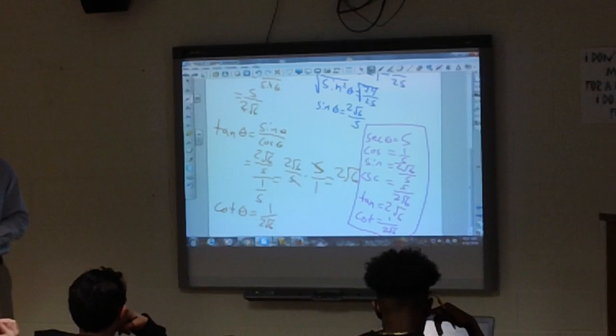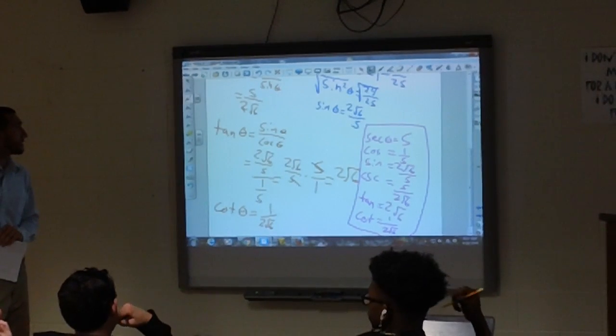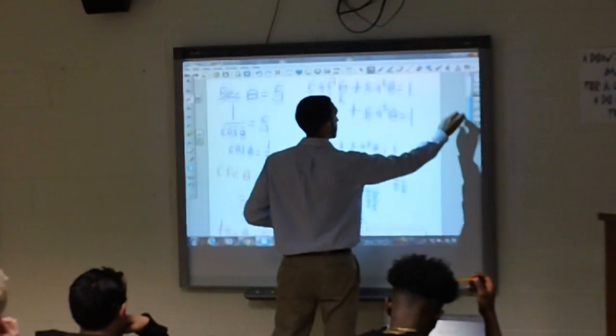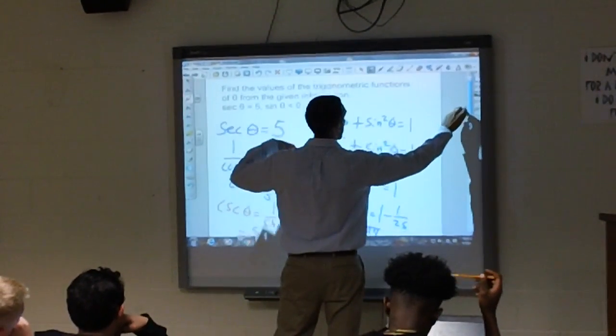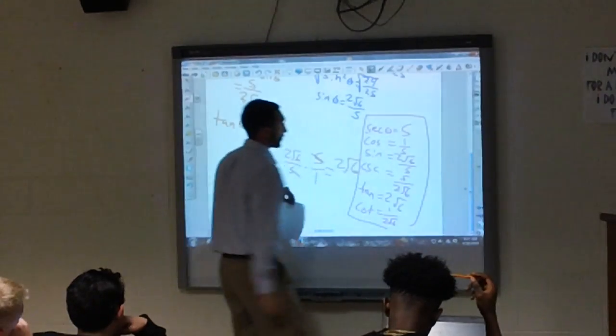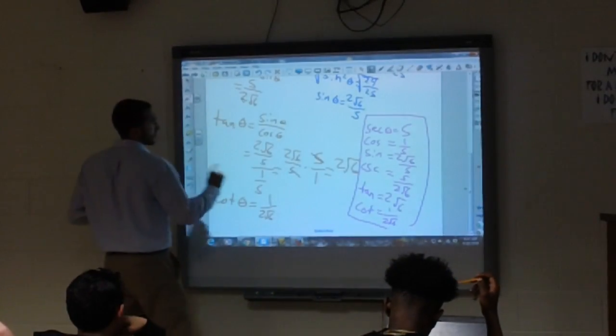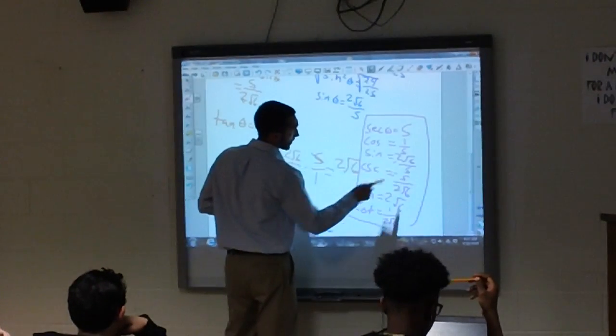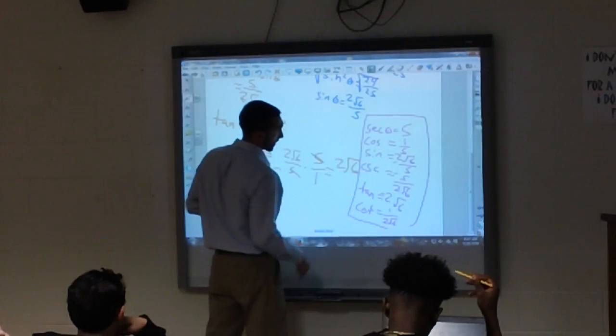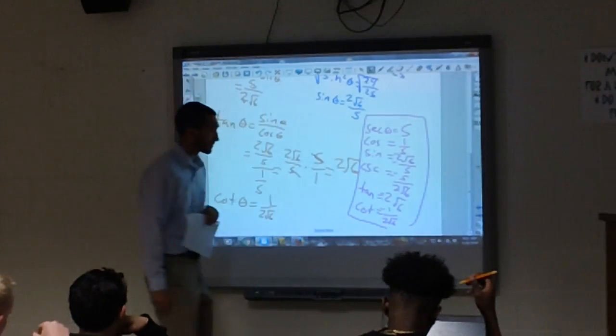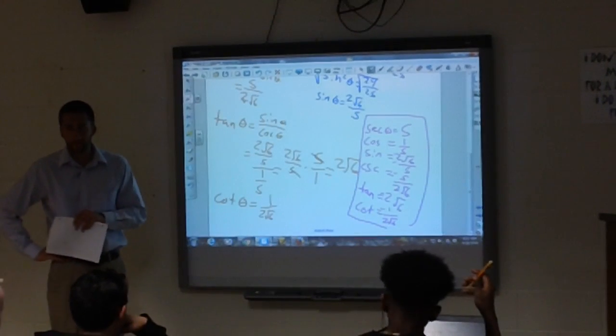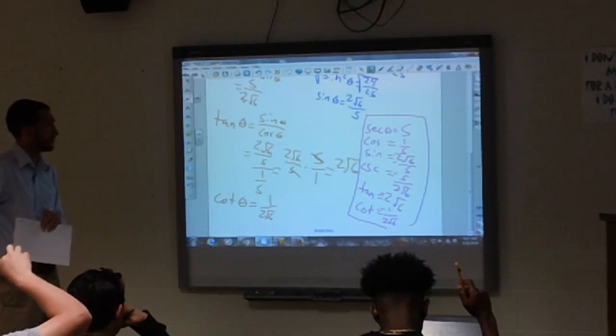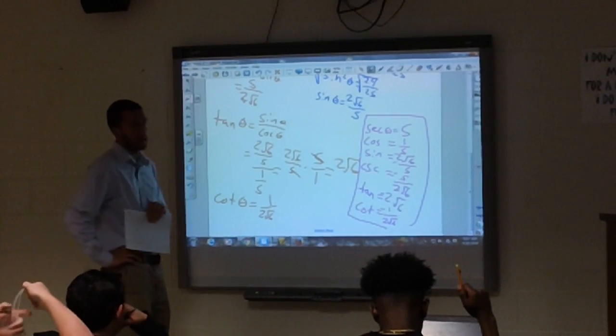Yes sir. Right. Then we have to determine what they give us. They say sine is negative. So if sine is negative, that means cosecant is negative. And that means tangent is going to be negative. And cotangent is going to be negative. Good, I'd like to wrap that up. Make sense?